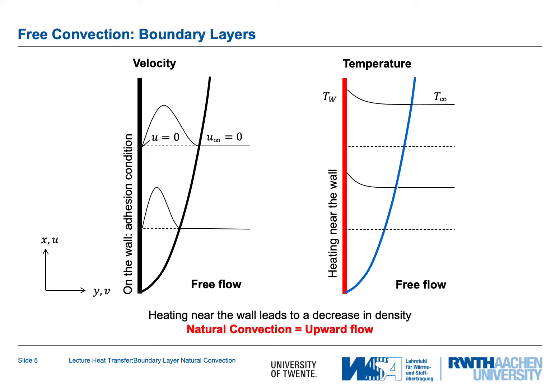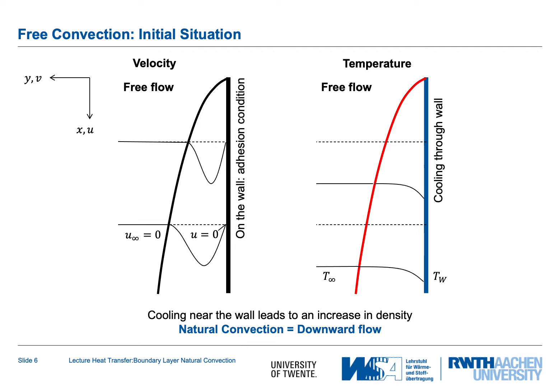This is seen in the velocity profile. Near the wall we have the no-slip condition — zero velocity — and far away there is no flow either, so in between we have a transition with increasing then decreasing velocity. This is the same at all locations in the boundary layer, giving an upward flow for the case of a hot plate in cold air. If we have cooling through the wall — meaning the surrounding air is hotter than the plate — the situation is reversed: we have a downward flow, and for natural convection with a cool wall, the flow direction is downward.